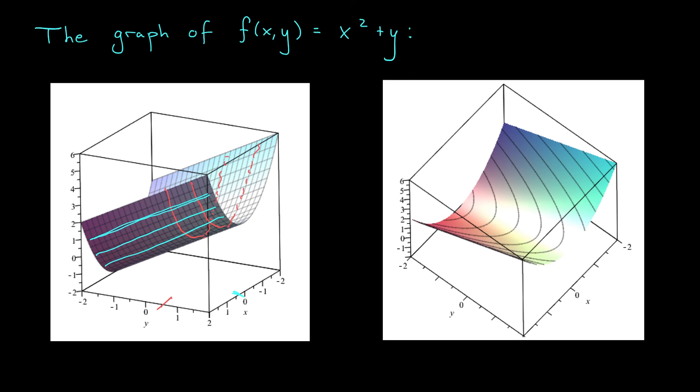Finally, what about those level curves from the beginning of our video? Well, I think it's a little bit easier to see them if you look at this graph from the top down. So take a look at the second picture here. If I slice this at a particular height, say z equals 1 here, sure enough, we're getting those parabolic level curves that we had at the beginning.